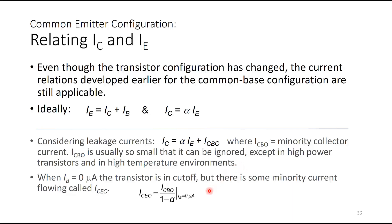When IB equals zero microamps, the transistor is cut off, but there is some minority current flowing called ICEO. ICEO is related to ICBO divided by (1 − α). This is additional knowledge — if you go deeper into semiconductor devices, you will encounter more considerations of non-ideal behavior.